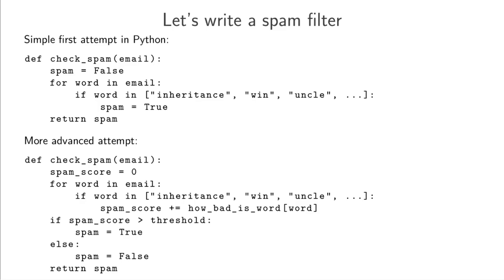So this is my more advanced attempt. We start with a spam score of zero and then what we do is we again loop through the words in the email. If the word is in our bad word list then instead of just marking this thing as spam we're going to increase the spam score. So the higher the spam score the more likely it is that this email contains spam. So this how bad is word thing here that is a dictionary and that returns a large value when we have a very bad word and a smaller value if the word isn't so bad.